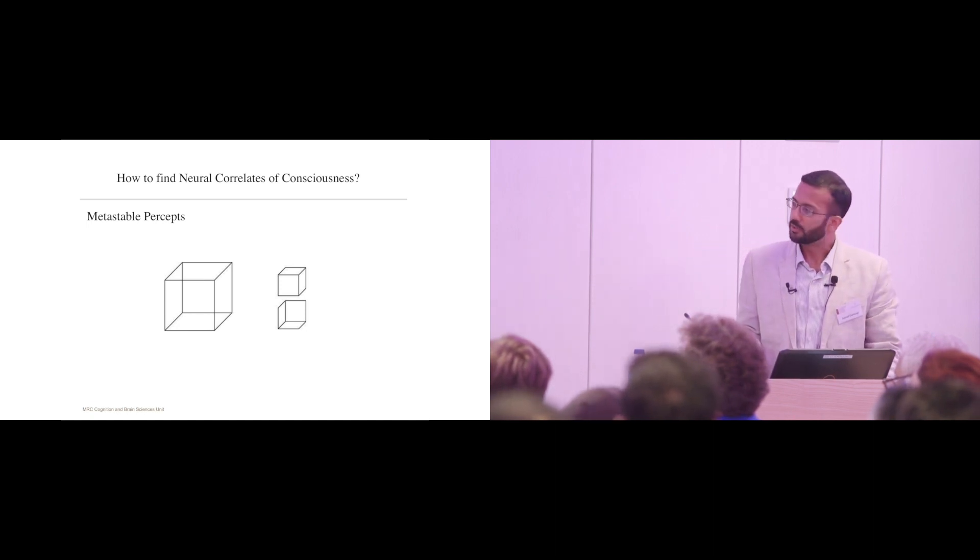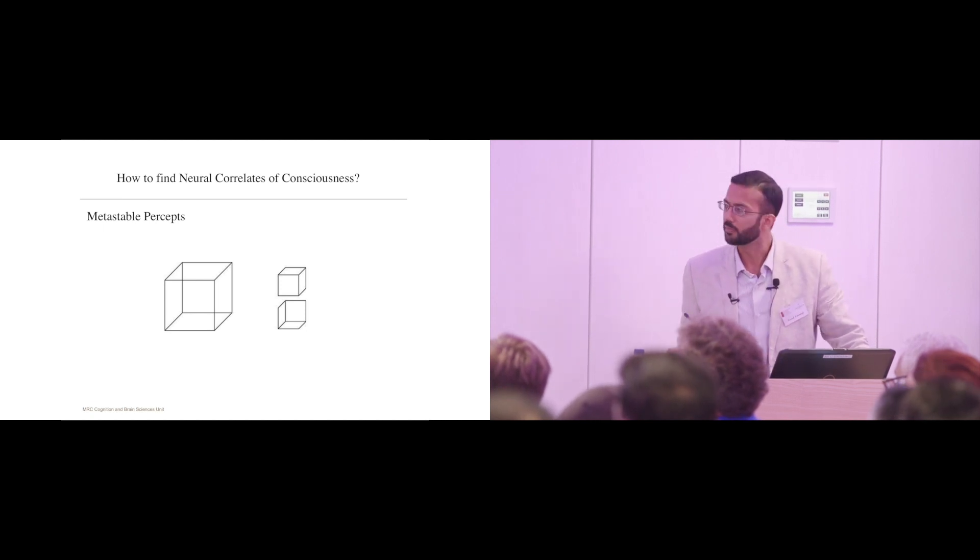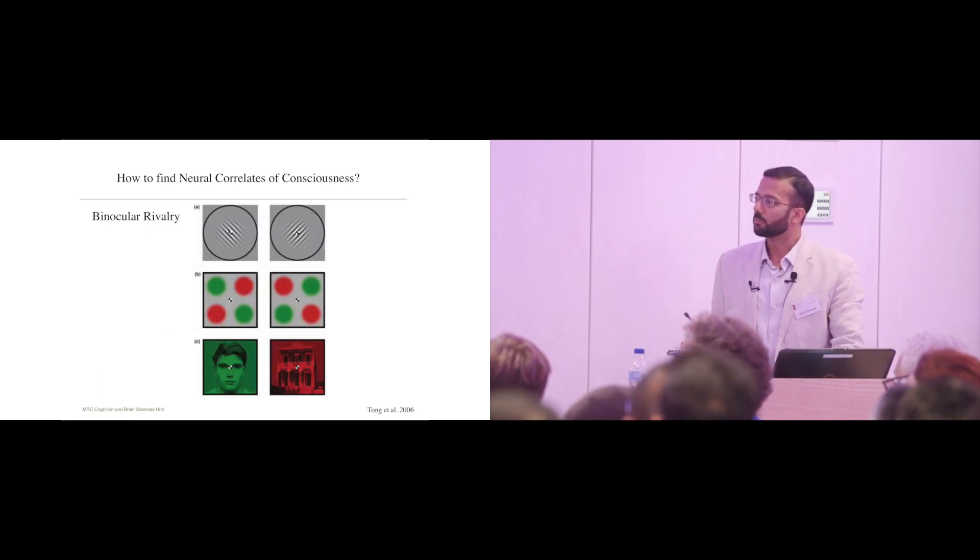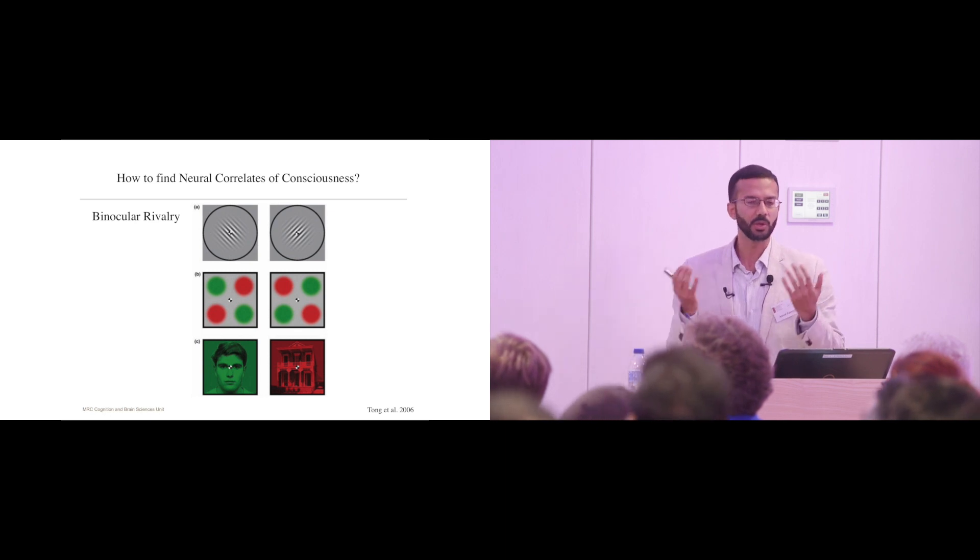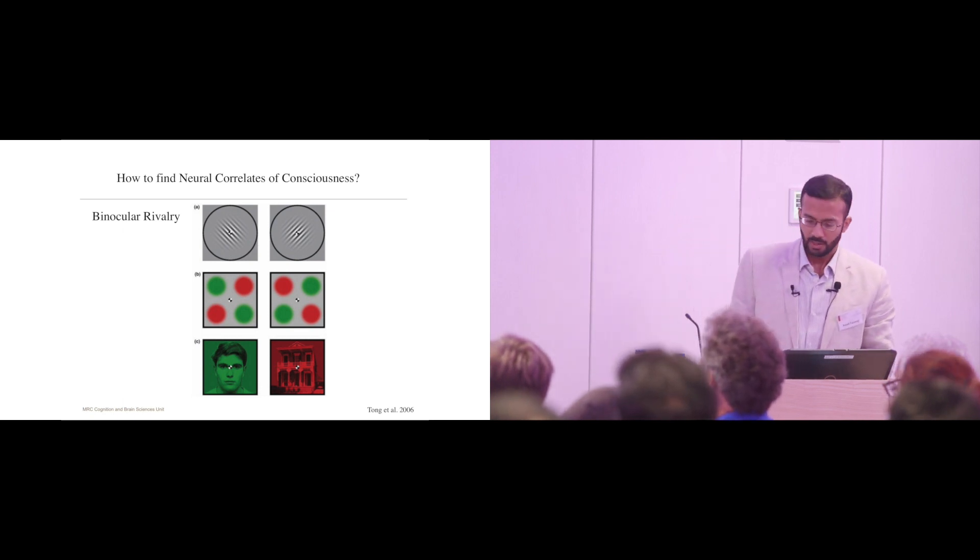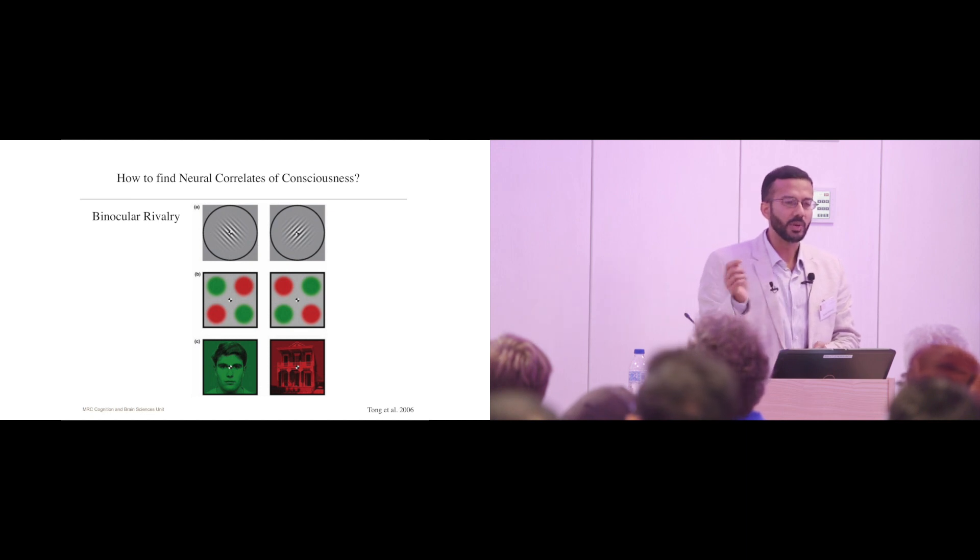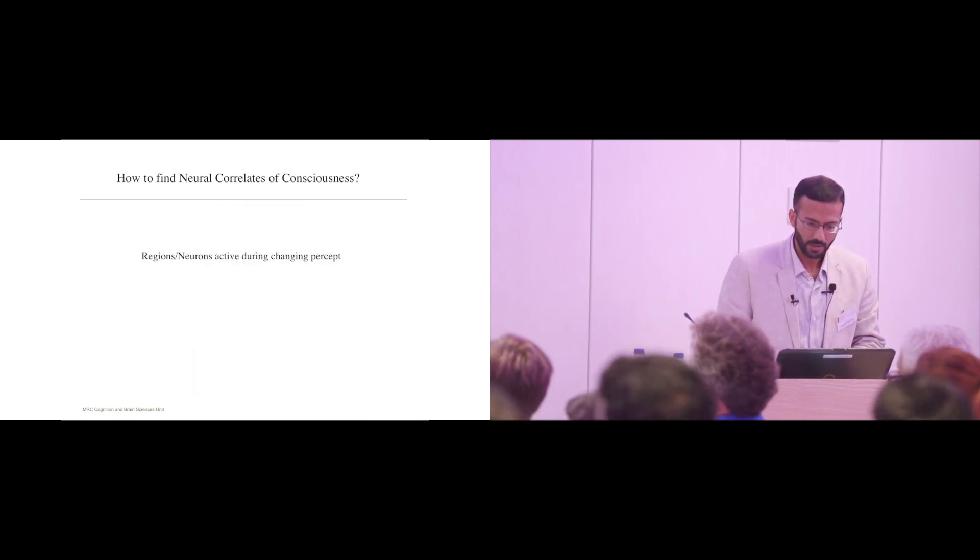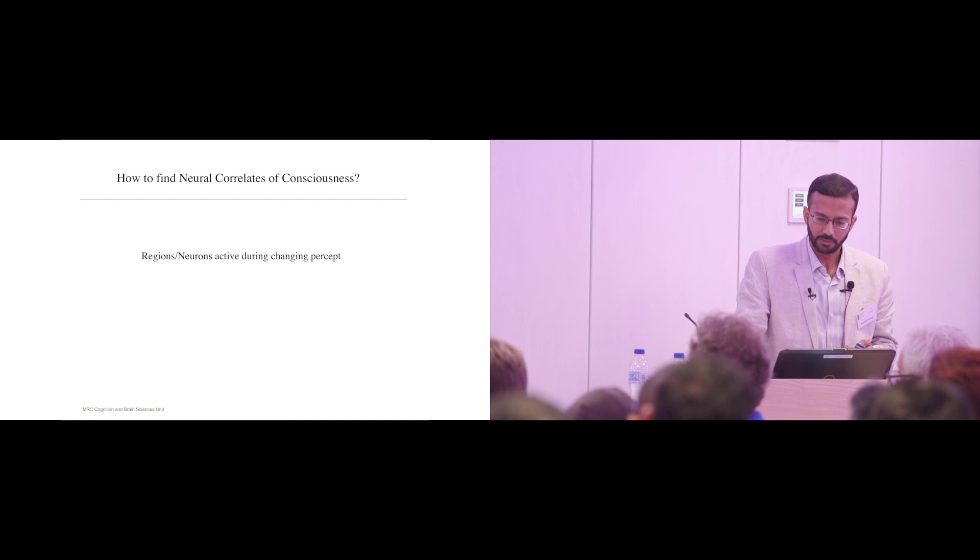There are other ways. For example, meta-stable percepts - if you focus on this cube for a while, you'll find that what you see switches between this and that. You can also give two different kinds of pictures to the two eyes. If the pictures have particular characteristics, what you'll see will not be an overlap but you'll occasionally see one picture alternating with the other. The participant's task is to convey when their percept shifts between the two, and you look at the regions which were active during the shift.